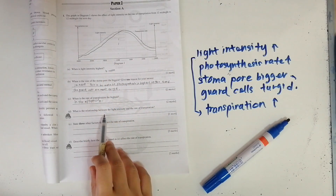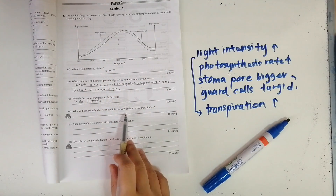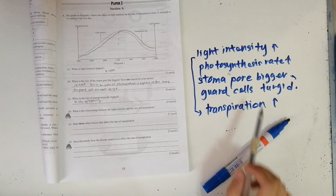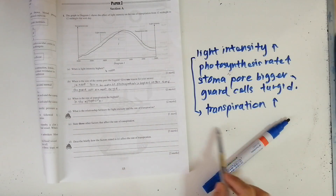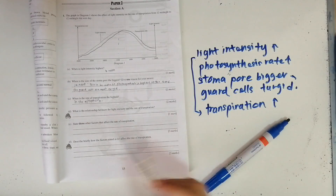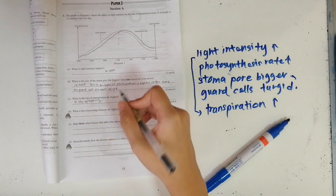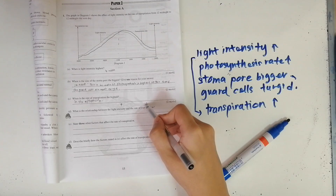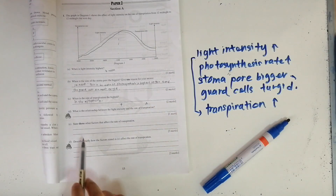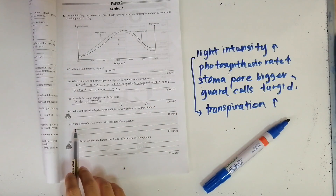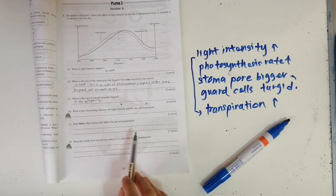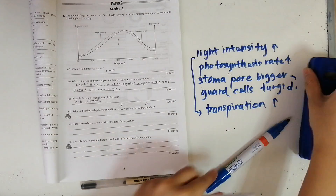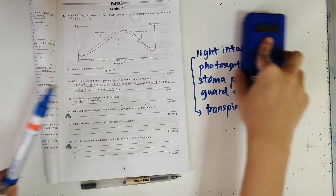What is the relationship between light intensity and the rate of transpiration? As I've said, when the light intensity is higher, the rate of transpiration is higher as well — when the light intensity increases, the rate of transpiration also increases.